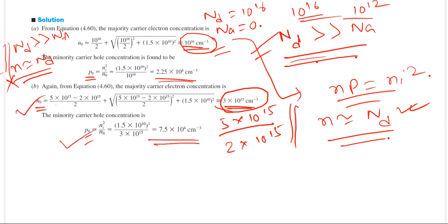The minority carrier concentration can then be calculated using the mass action law. Similarly, if the semiconductor is p-type with Na greater than Nd, you can solve the same type of numerical problem by placing p in place of n. One important assumption underlying all these derivations is that all donors and acceptors are fully ionized — meaning if you add 10^15 donors or acceptors, all 10^15 electrons or holes are generated. All derivations are valid only for this case of full ionization.